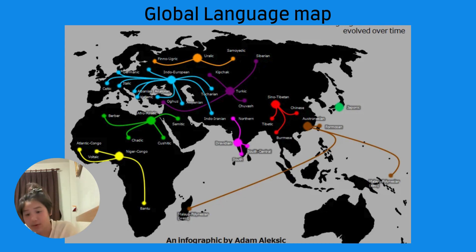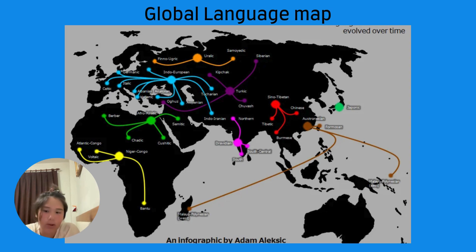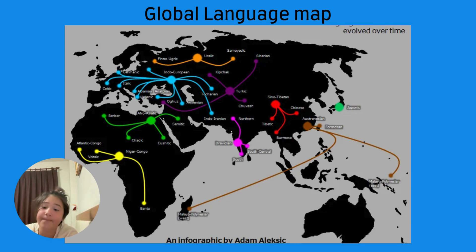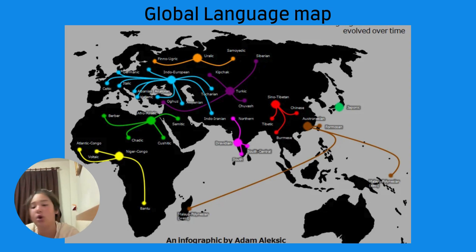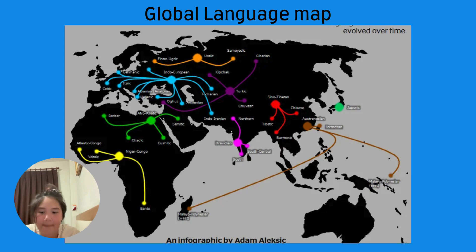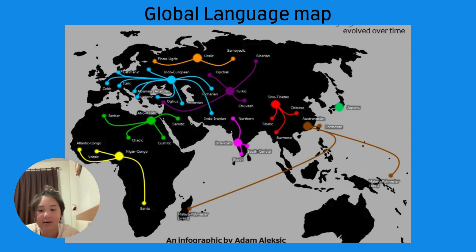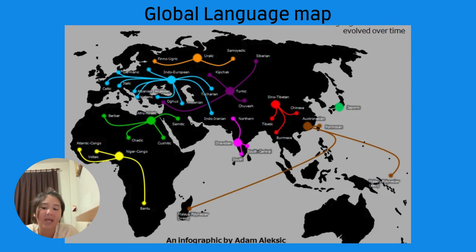The first language — where it all began. Let's start at the very beginning, because well, we have to. The first human languages probably appeared about 100,000 years ago, though good luck finding any reliable recordings from back then — there aren't any. These early languages were all spoken, no writing yet. Imagine cavemen grunting at each other and somehow managing to convey 'pass the mammoth leg.' Most linguists agree that the earliest languages came out of Africa, just like humans did.